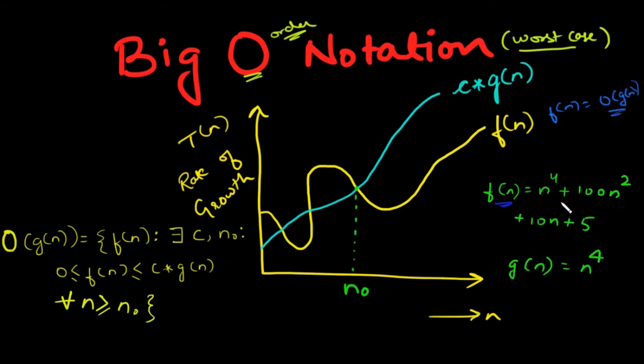If you don't understand it, don't worry, look at this way. Let's say f(n) equals n^4 + 100n^2 + 10n + 5. Then n^4 is our g(n).